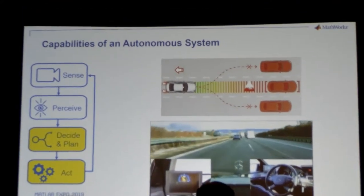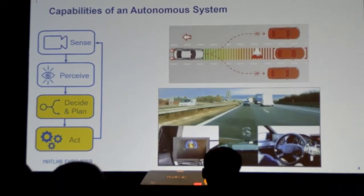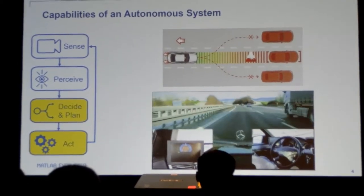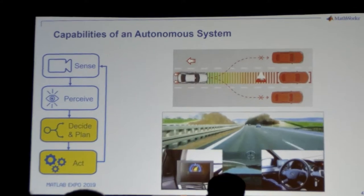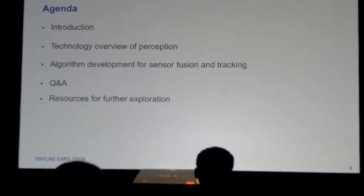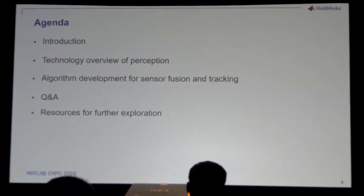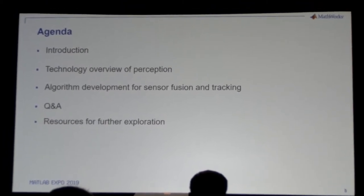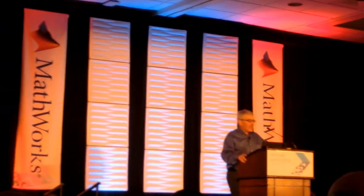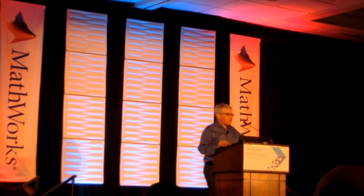A lot of my examples will be in automated driving, but a lot of what I show here will be applicable across the board for other autonomous systems. I'll give you a quick introduction and then we'll talk about the technology we have for perception, mainly around sensor fusion and tracking. We'll also look at some of the algorithms available for development, and I'll answer questions and show you resources to get started quickly.